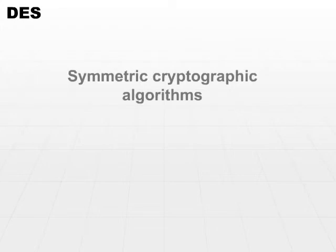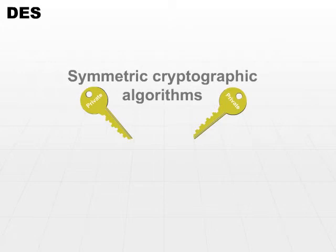Alright, now let's move into the actual algorithms themselves. First, we're going to start with a discussion of symmetric cryptographic algorithms. Symmetric cryptographic means that we're using secret keys or private keys — in other words, the same key encrypts and decrypts. So we have to exchange the key and make sure that our receiver, the recipient of our message, has the same key that we're using to encrypt.